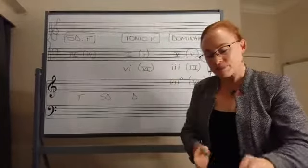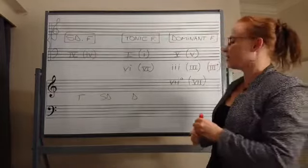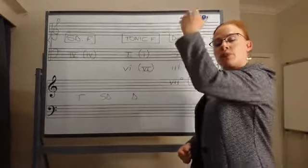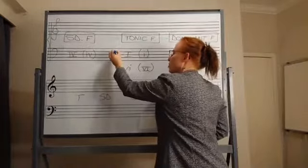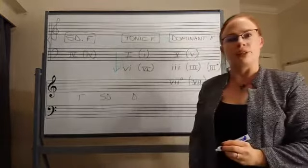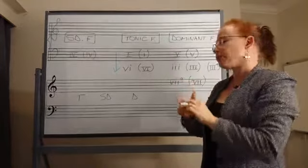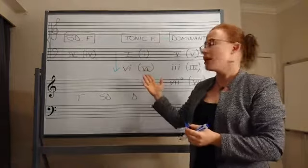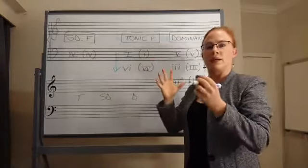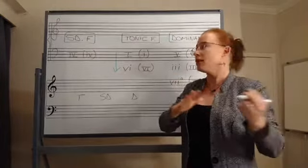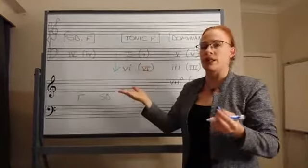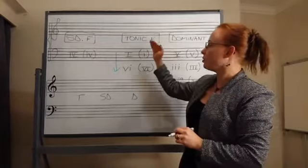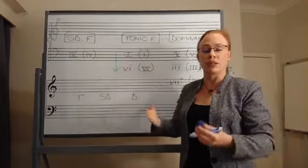Within the tonic function, you are allowed to move from your primary chord to your secondary chord — in other words, from your tonic chord to your sub-mediant chord — but not the other way around. The chords in brackets show you the quality of the triads in a minor key, and the ones without brackets are the chords found in a major key. So I can move from my tonic chord to my sub-mediant chord, but not the other way around.